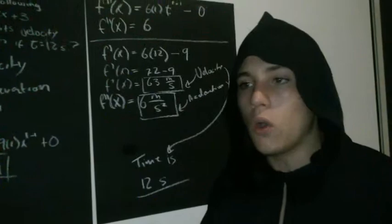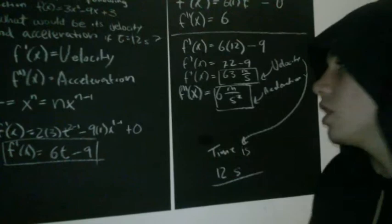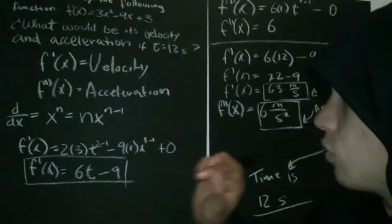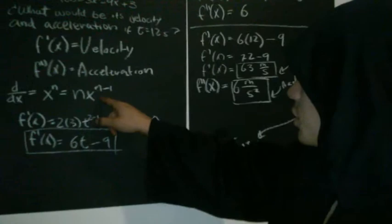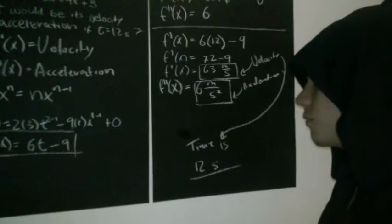So, we already know how to derivate, but for those who don't know how to get the derivative, we are going to show you the basic rule. So, we have our expression here, right? So, the rule is take the exponent, multiply our expression by the exponent, and then subtract 1 to the exponent we have. Okay? So, we are going to get our first derivative, to get velocity.